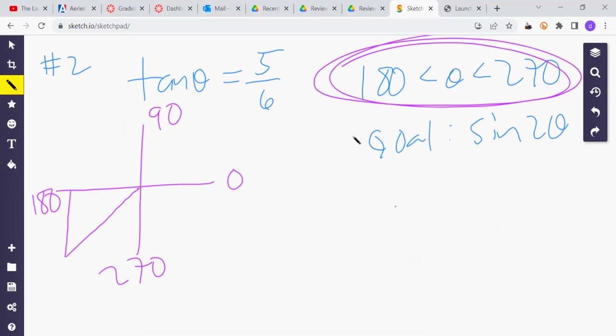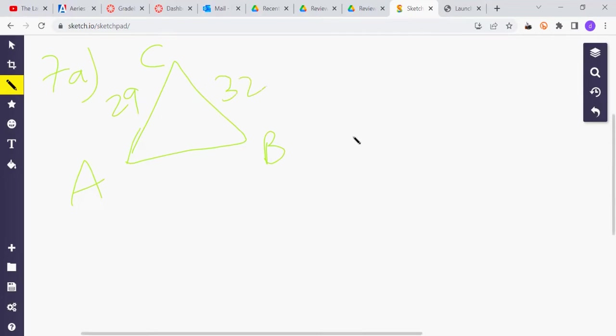Now, let's try number 7, part A, as requested. So for that one, we have this triangle. They call this ACB. This is 29. This is 32. This is 35. And the goal is B. Angle B is the goal.